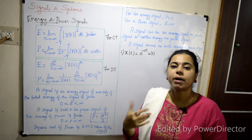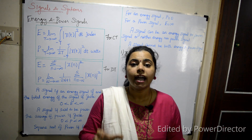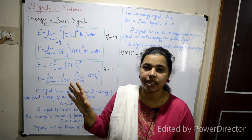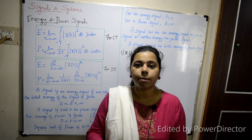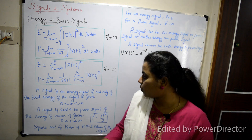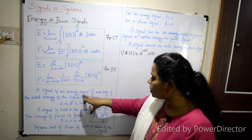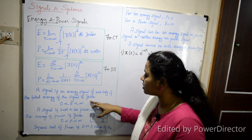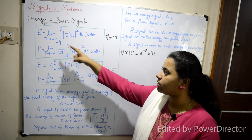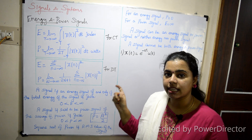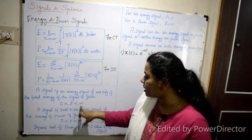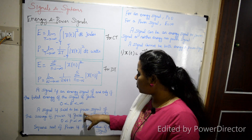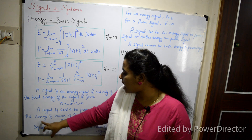Now, for the energy signal and power signal — how do you find the value of the signal? If you substitute the signal into the energy formula and the answer is finite, then that is an energy signal. A signal is an energy signal if and only if the total energy of the signal is finite.